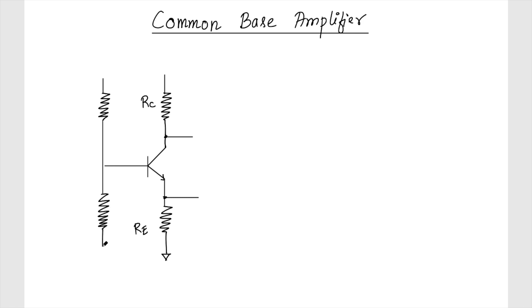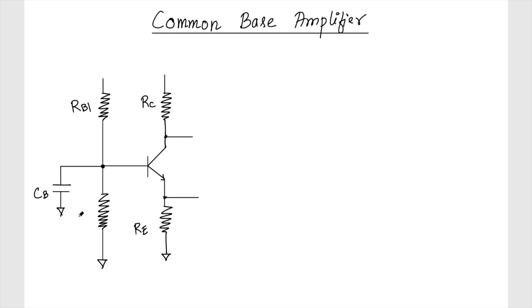So we need to have these two resistances RB1 and RB2. But as I was mentioning, the base has to be AC-wise grounded. So there will be a capacitor CB for the base, and this connects to ground. So AC-wise this is grounded. These two resistances are there only for the DC biasing of the common base amplifier.